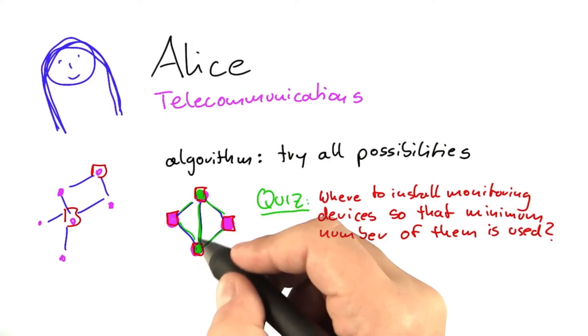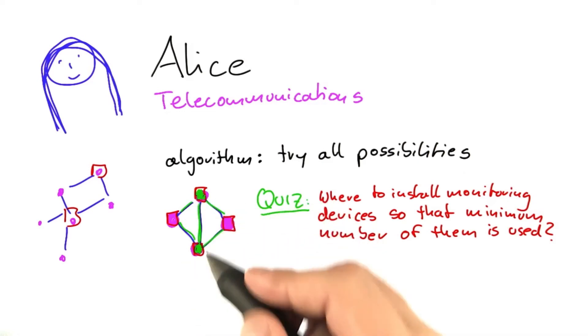So this one is covered twice, but we need at least two devices to cover the whole network. And actually, in this case, this is the only possible solution for this.